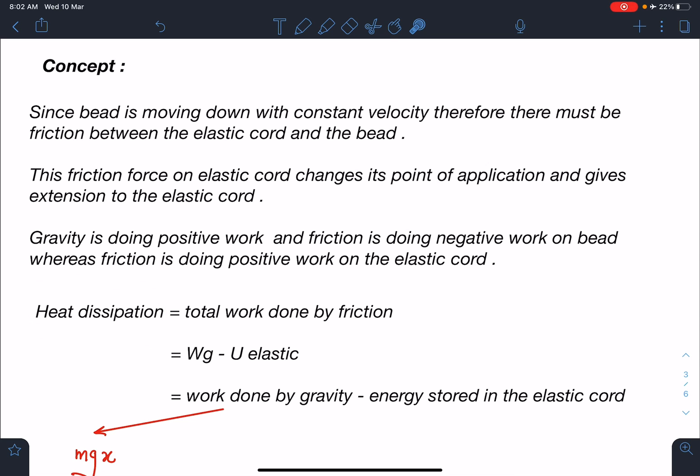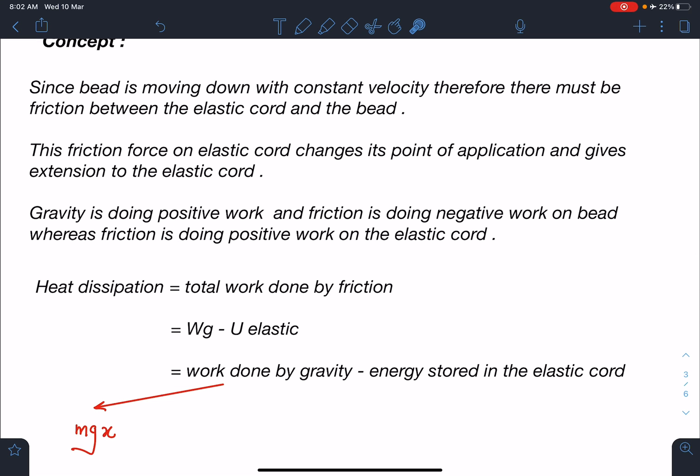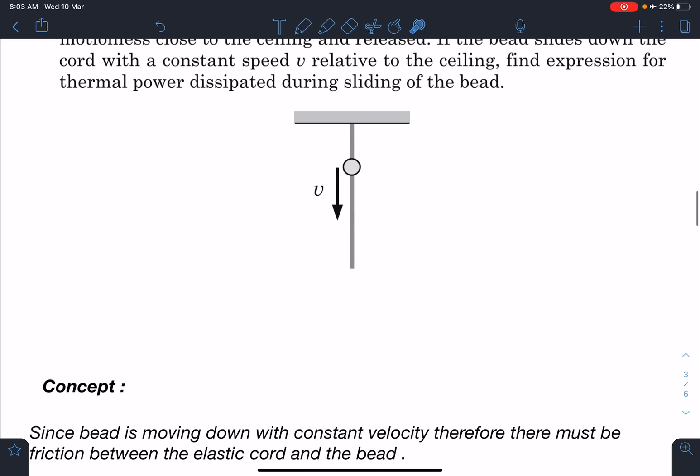So in this situation, gravity is doing positive work - this will be the gain in energy and some part of this energy will be stored in the cord as elastic potential energy. The difference of these two will be dissipated in the form of heat. We can write: work done by gravity minus energy stored in the elastic cord. If we assume this distance to be x, then work done by gravity is mgx. The whole challenge is about finding energy stored in the elastic cord.